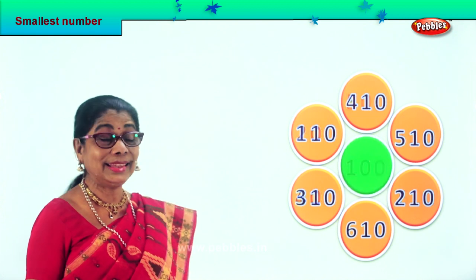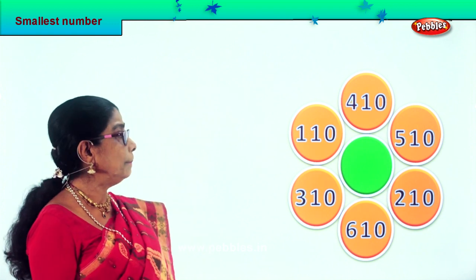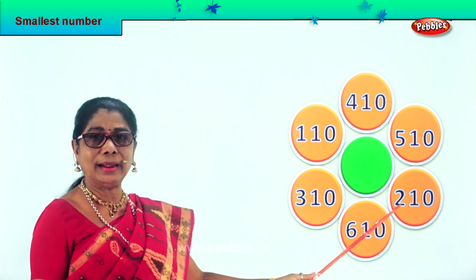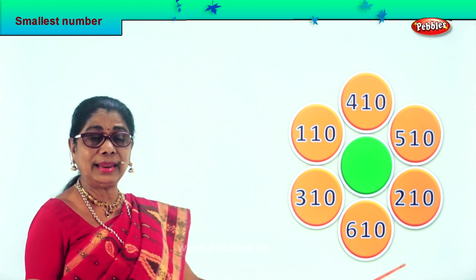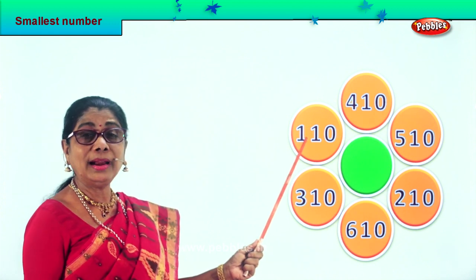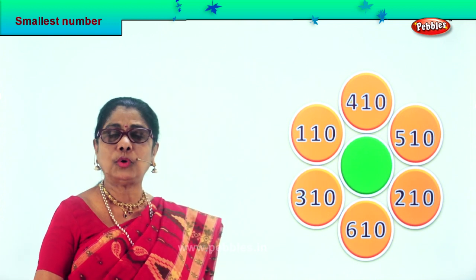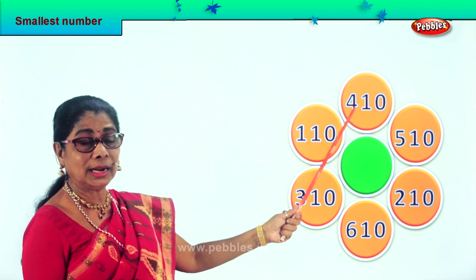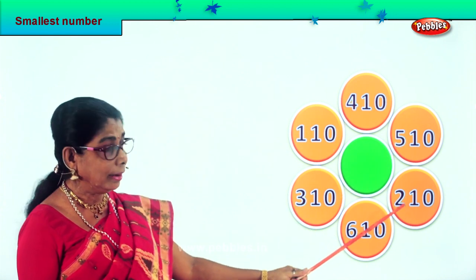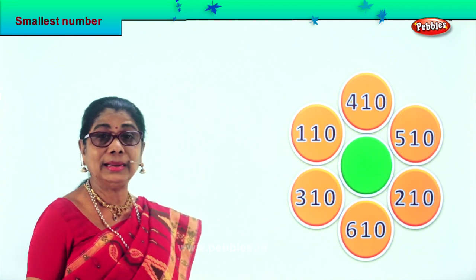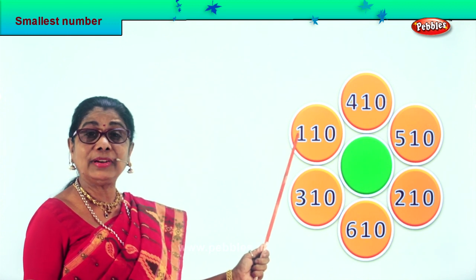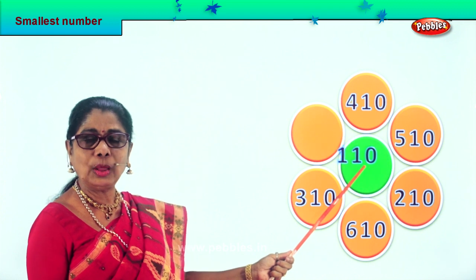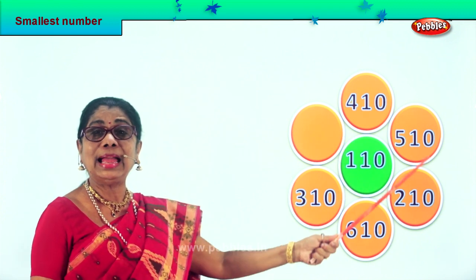Let's take another sum. Here we are — first we are going to read aloud the numbers: four hundred ten, five hundred ten, two hundred ten, six hundred ten, three hundred ten, and one hundred ten. In the ones place we have all zeros, and in the tens place we have all ones. Now let's look at the hundreds places — four, five, two, six, three, and one hundred. Certainly, one hundred and ten is the smallest number given here, so we pick that and put it in the middle.